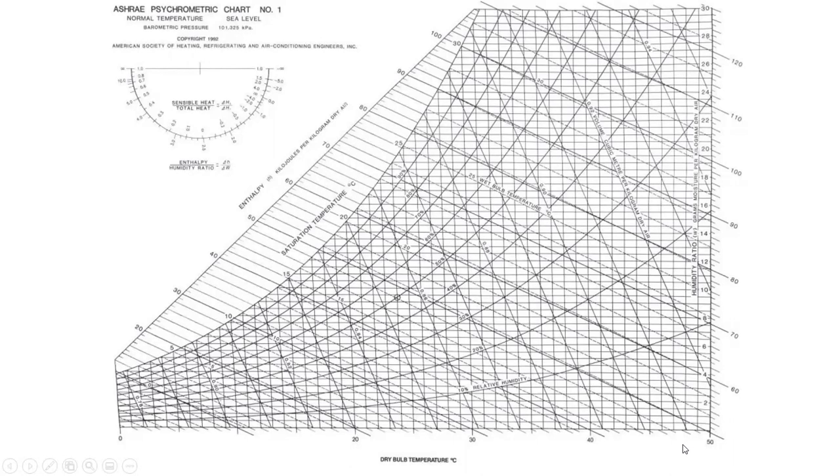This is the standard ASHRAE psychrometric chart. Down here on the bottom axis we have dry bulb temperature. This one goes from zero degrees C — I'm a Fahrenheit guy, but I did centigrade for you — up to 50 as the highest. These lines are pretty much vertical; they may have a little bit of slant to them, but they're pretty much vertical lines.